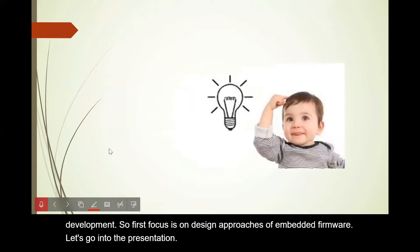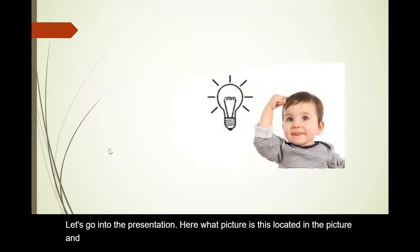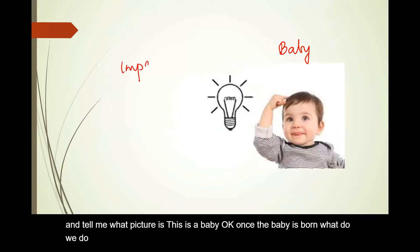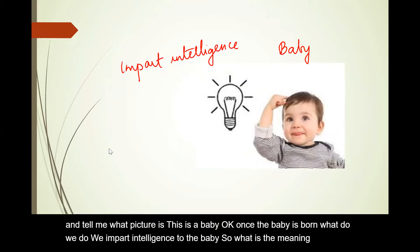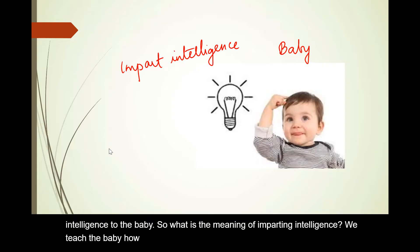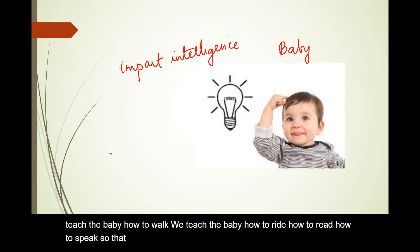Look at the picture — what picture is this? This is a baby. Once the baby is born, what do we do? We impart intelligence to the baby. What is the meaning of imparting intelligence? We teach the baby how to walk, how to write, how to read, how to speak. That is imparting intelligence.